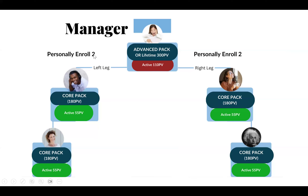You need to personally enroll two people on your left and two people on your right. Personally enroll means they came in with your referral link. They have to have purchased the core pack or have a lifetime PV of 180 PV, and they need to be active every 31 days with a 55 PV order. That's two on your left and two on your right.